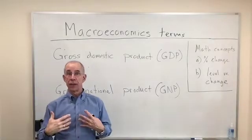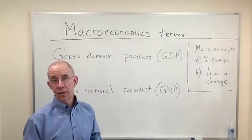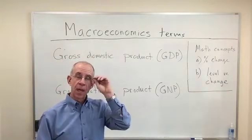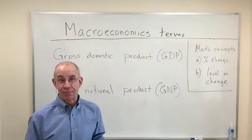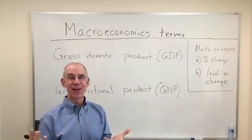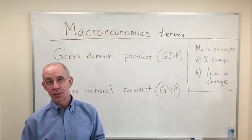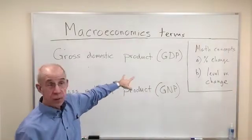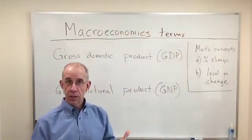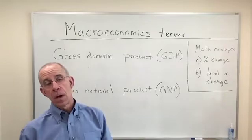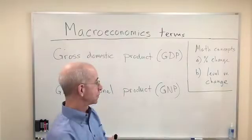Policy is often about trying to encourage economic growth with acceptable levels of inflation and unemployment. The question naturally arises: the growth of what? What is it you're trying to grow? The most typical measure of economic growth that economists use are either gross domestic product or gross national product. We're going to use this video to describe what those terms mean and how one might measure changes in those variables.